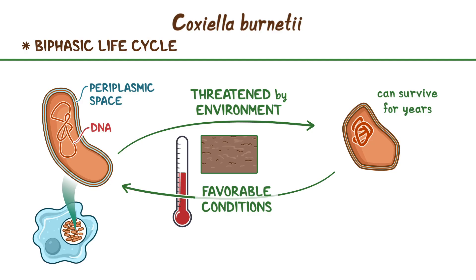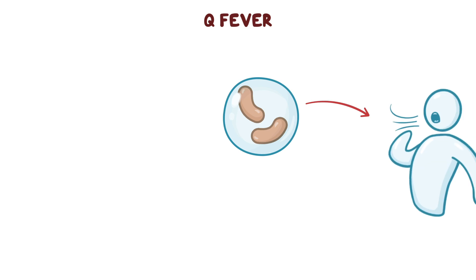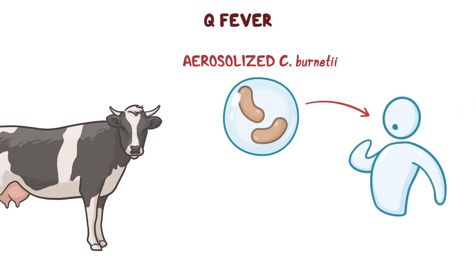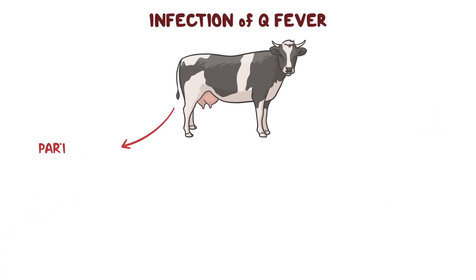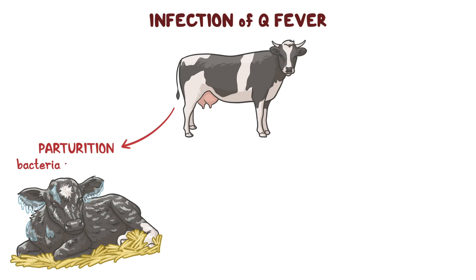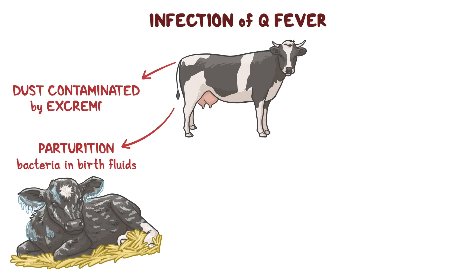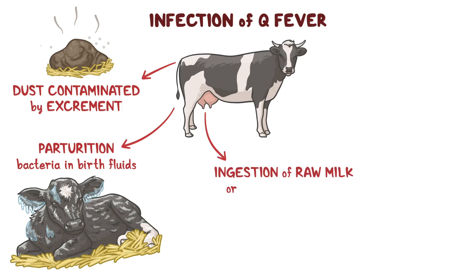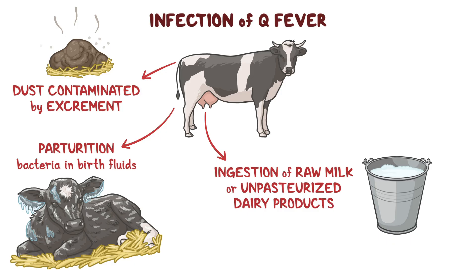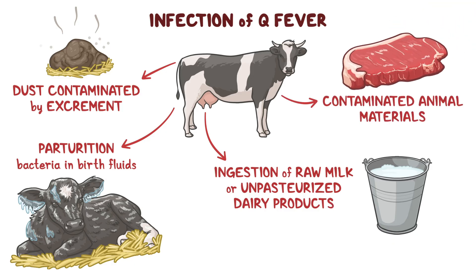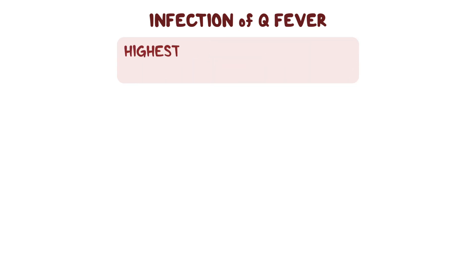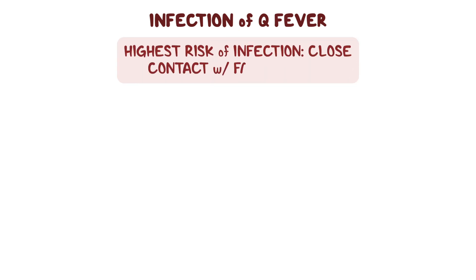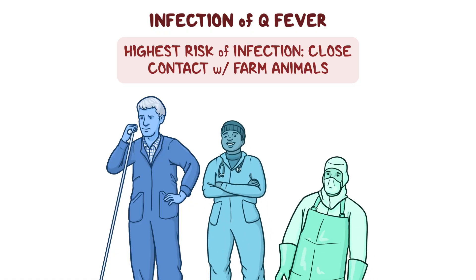The primary disease that Coxiella burnetii causes is called Q fever. This disease is most commonly acquired by inhalation of aerosolized C. burnetii from an infected animal. Infection can happen during parturition when large amounts of bacteria are released in birth fluids, or from dust contaminated by animal excrement, such as when cleaning a barn. It can also be picked up through ingestion of raw milk or other unpasteurized dairy products, or by contact with contaminated animal materials. People at highest risk include those in close contact with farm animals, such as farmers, veterinarians, and slaughterhouse workers.